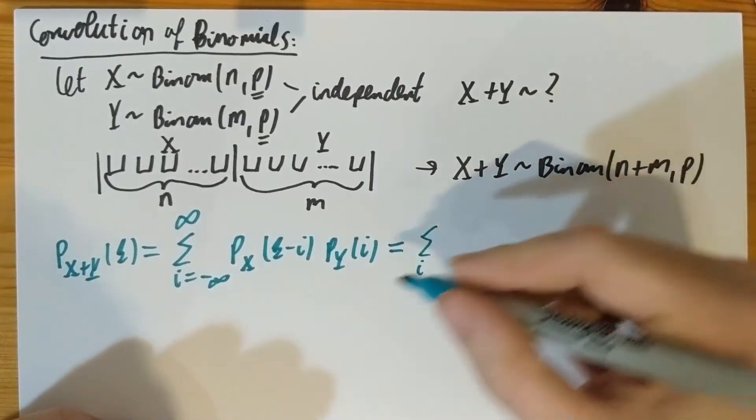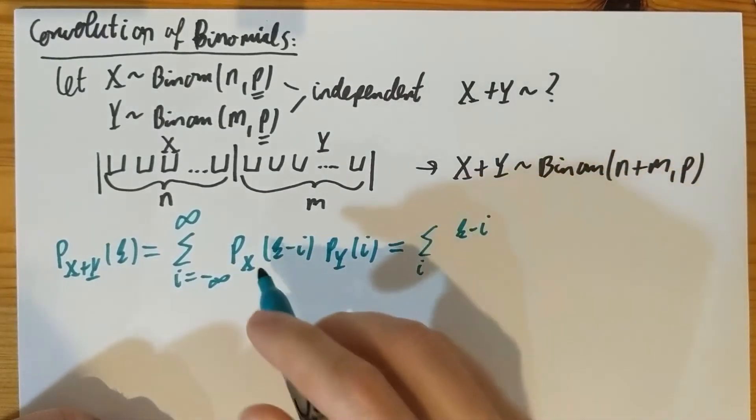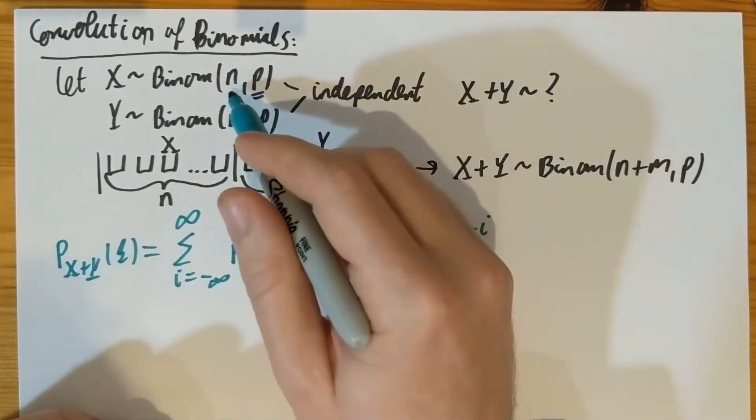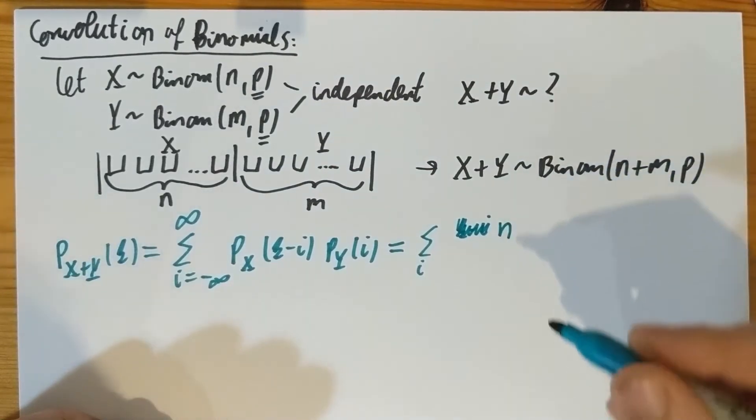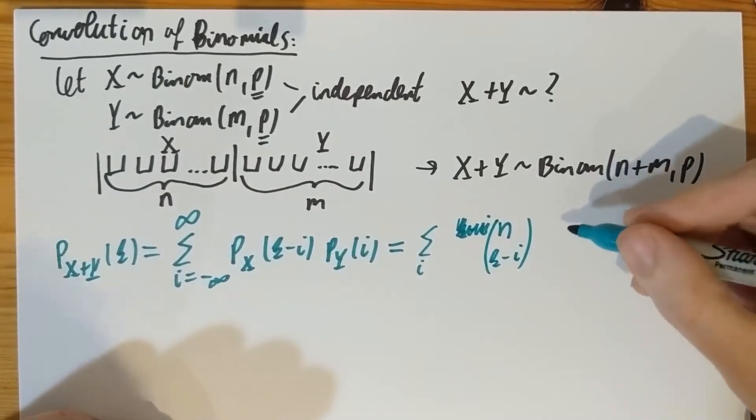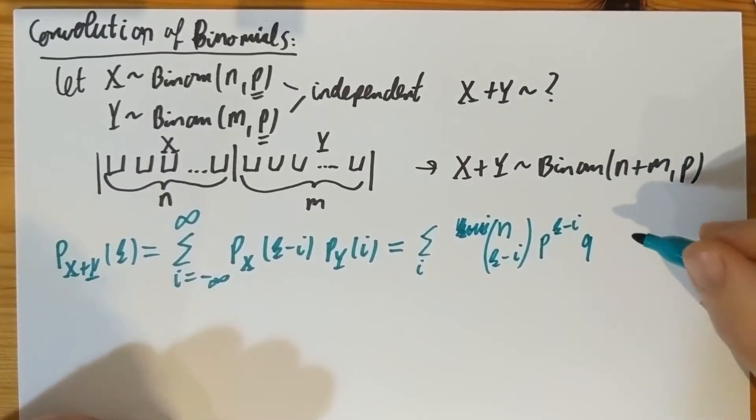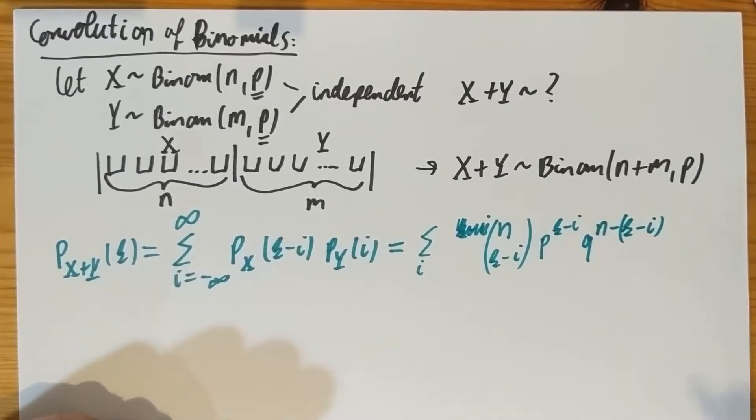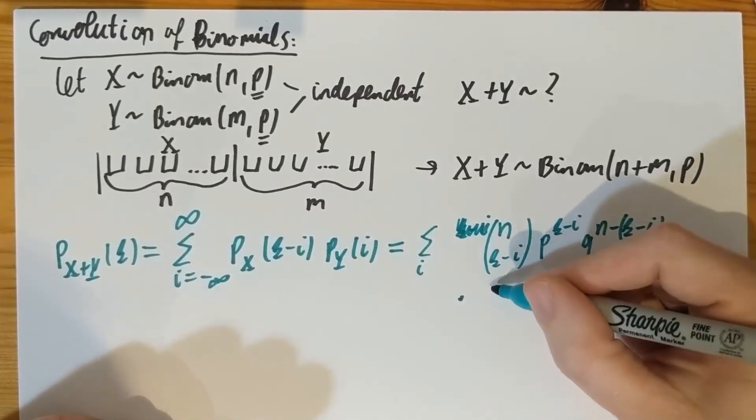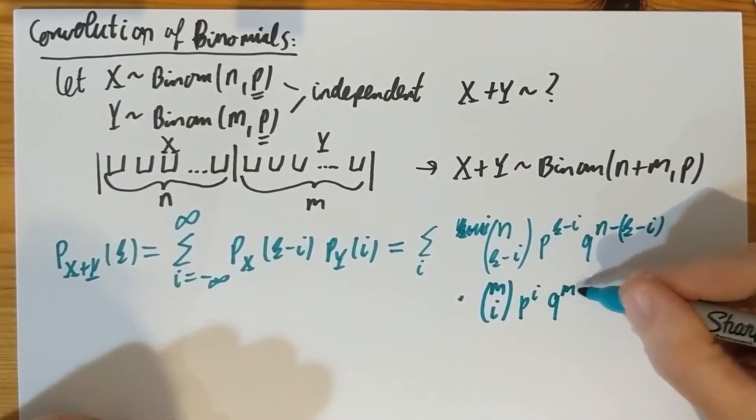So let's write this out. The mass function of X is a binomial of parameter N and P at K minus I, means that I have to do the binomial coefficient N choose K minus I. I have to do P, which is the success probability, to the number of successes. I have to do Q, which is 1 minus P, to the number of failures, which is N minus K minus I, like this.